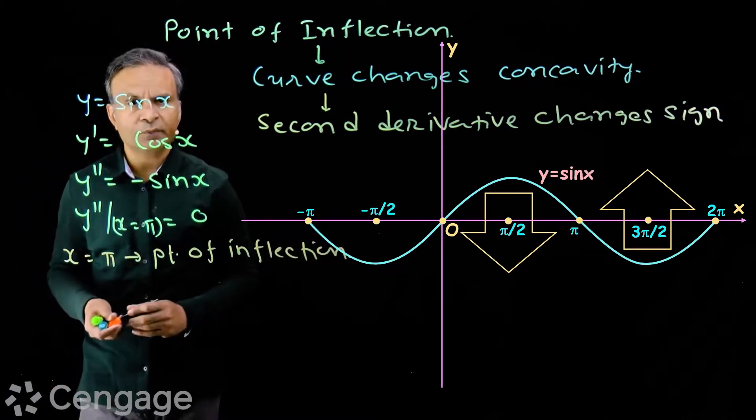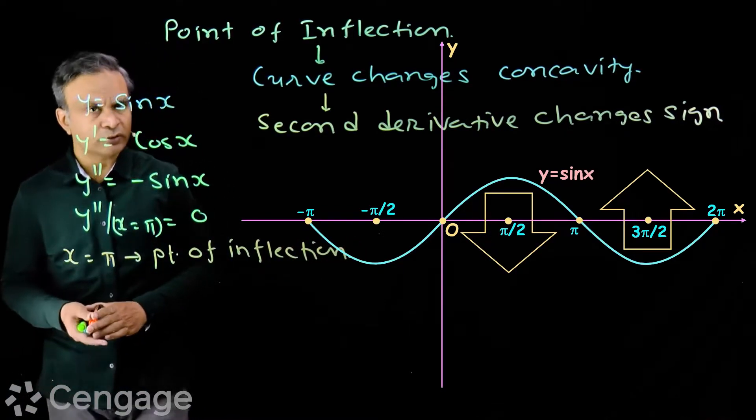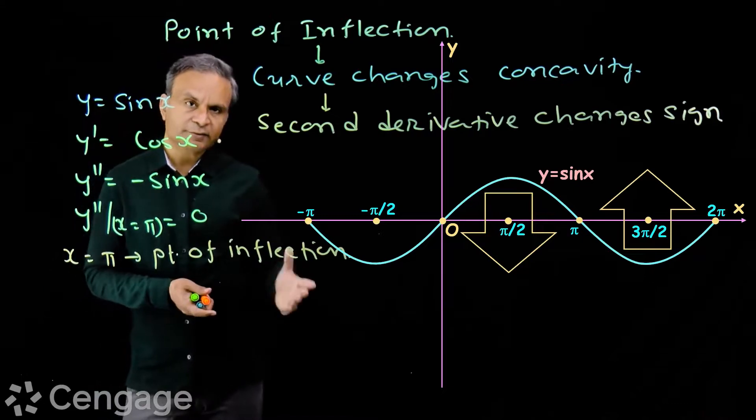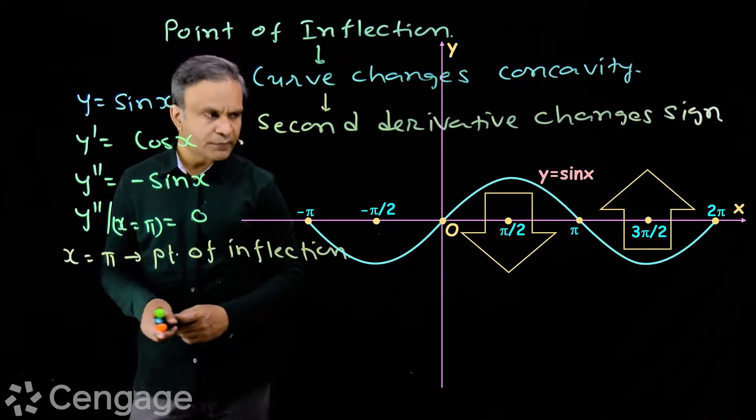So, what is a point of inflection? It is the point on the curve where the curve changes its concavity.